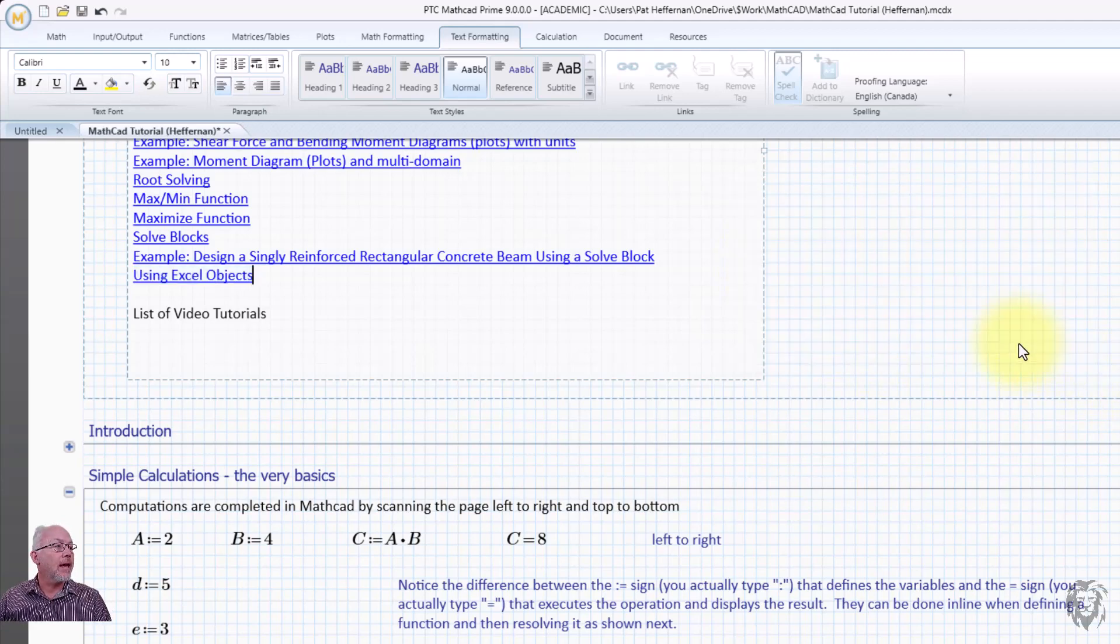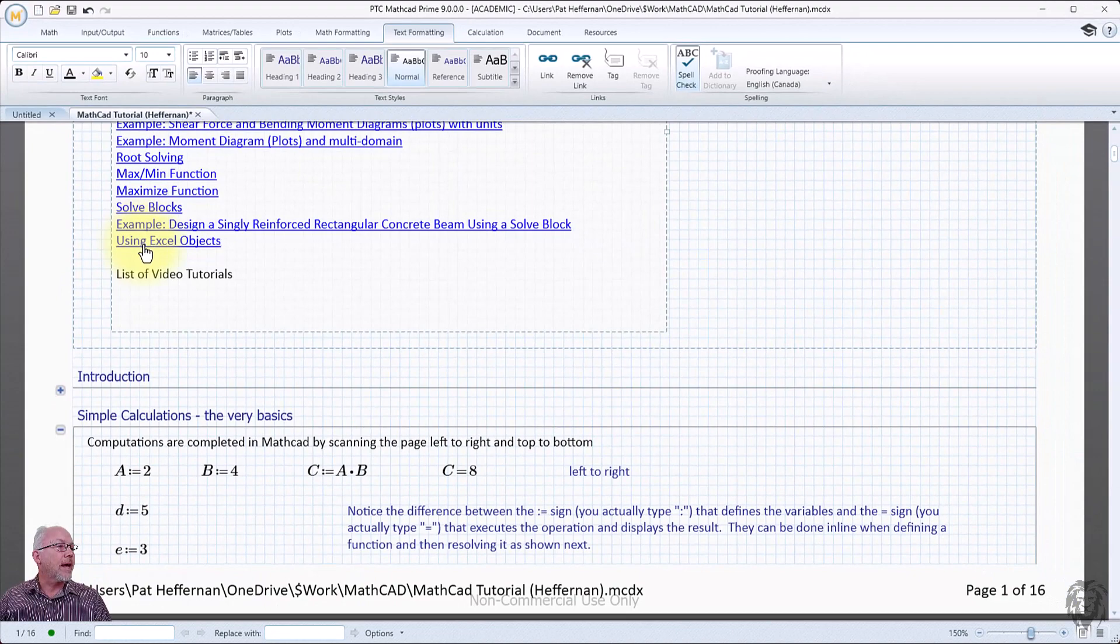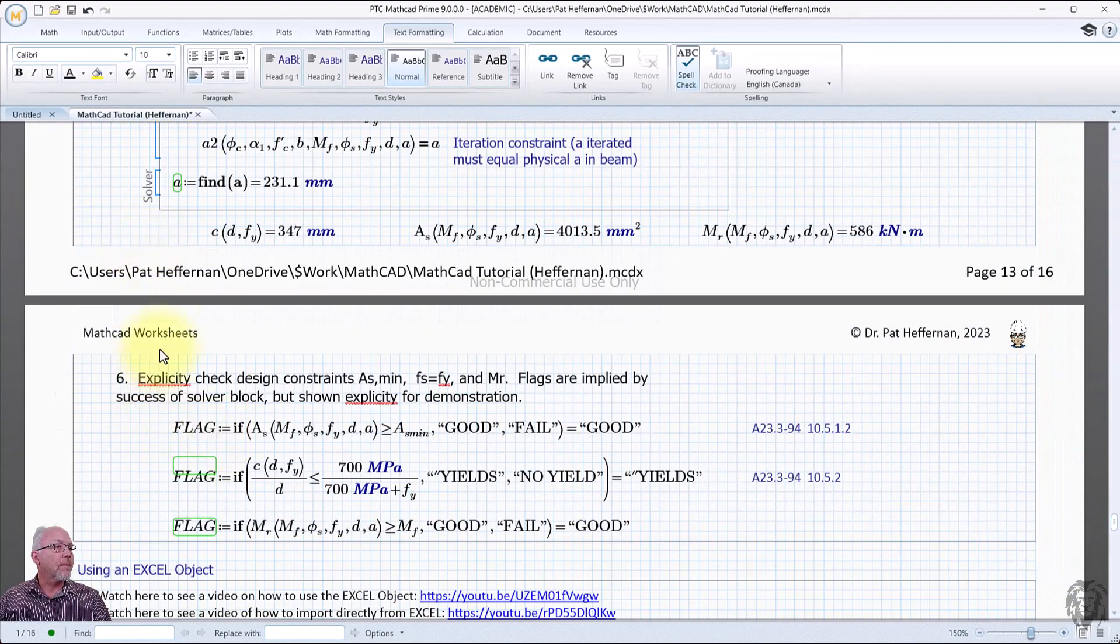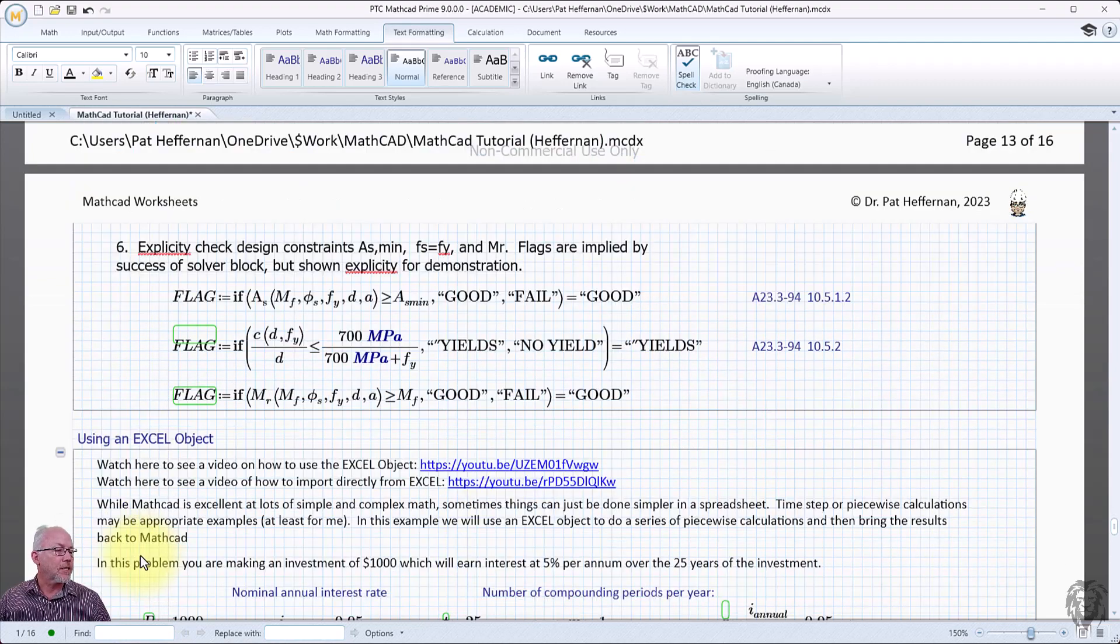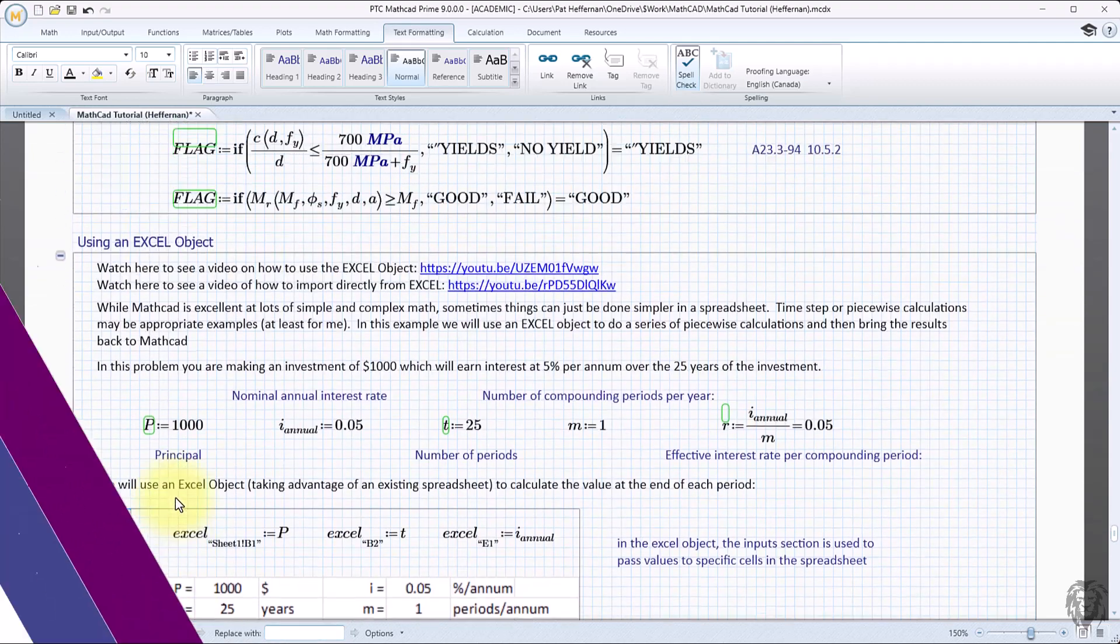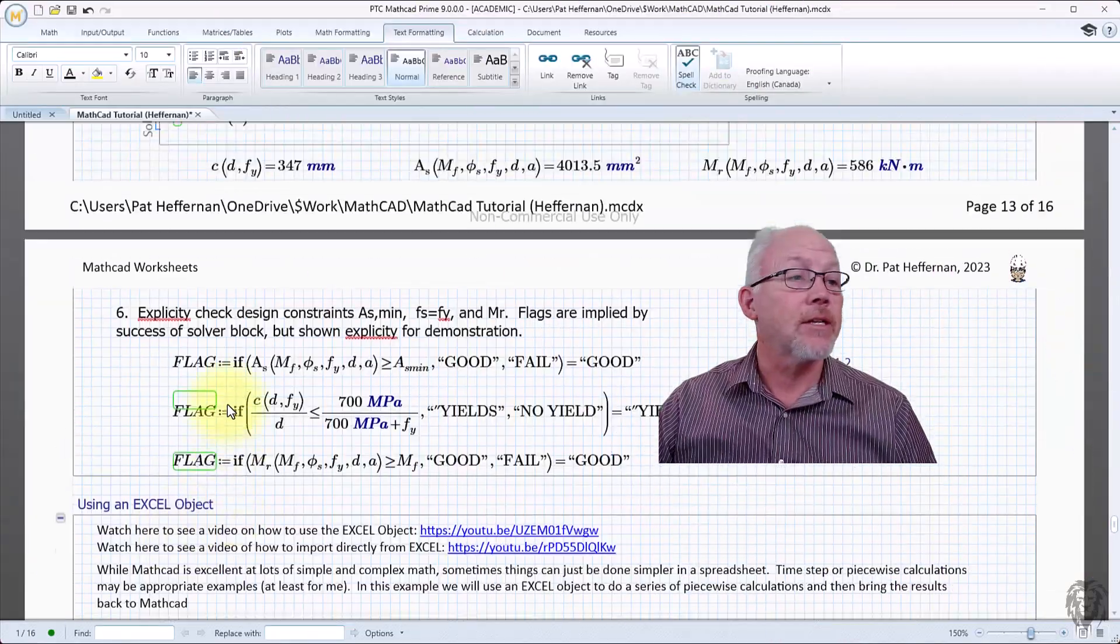And I'm going to say okay, it now shows as a link. And so if I hold the control button down and press it, it should bring me to that link. And you see it just brings it to the bottom of the page and then you can scroll from there. And so that's how you do internal hyperlinks.